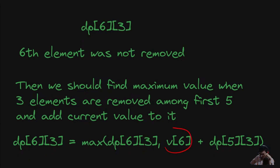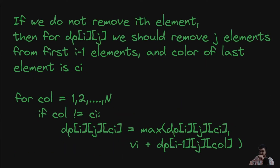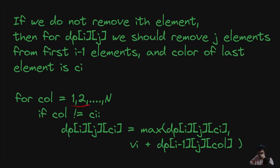To handle colors, we add the color of the last element picked to the DP state. Now dp[i][j][c] denotes the maximum value when exactly j elements are removed among the first i elements, and c is the color of the last picked element. If we do not remove the i-th element, then for dp[i][j][c] we loop over all previous colors not equal to c_i, enforcing no two adjacent balls of the same color.